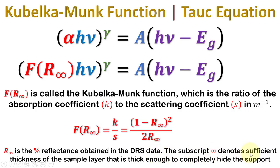R infinity is the percent reflectance obtained in the DRS data. The subscript infinity denotes sufficient thickness of the sample layer that is thick enough to completely hide the support on which the desired material is placed or deposited.